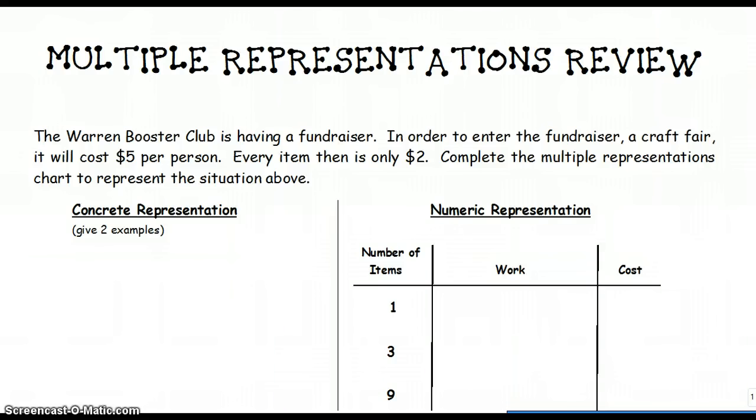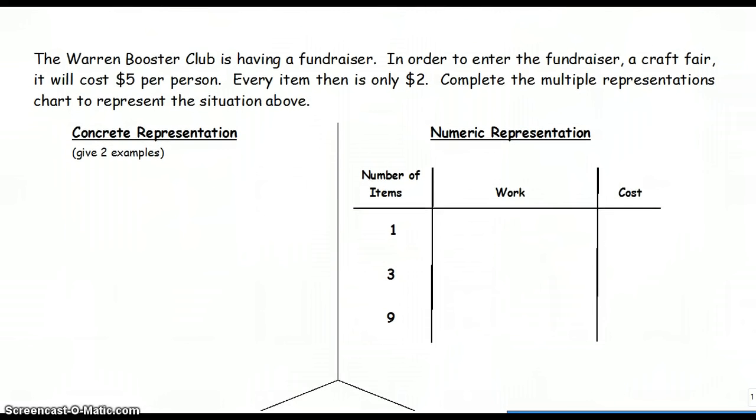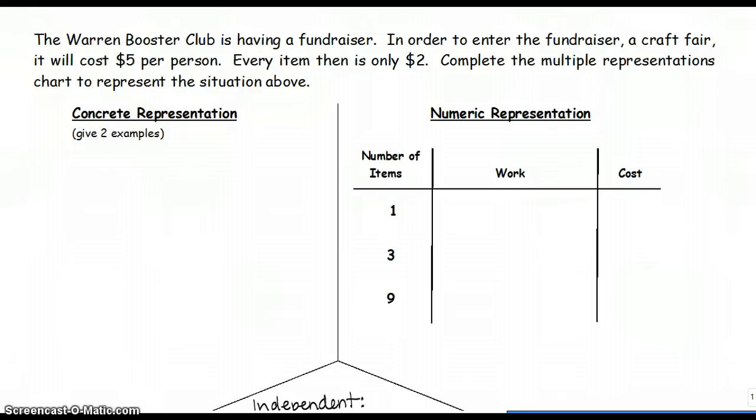Here's an example that will show you how to do all four. The Warren Booster Club is having a fundraiser. In order to enter the fundraiser, which is a craft fair, it will cost $5 per person. Every item then is only $2. Complete the multiple representations chart to represent the situation above.